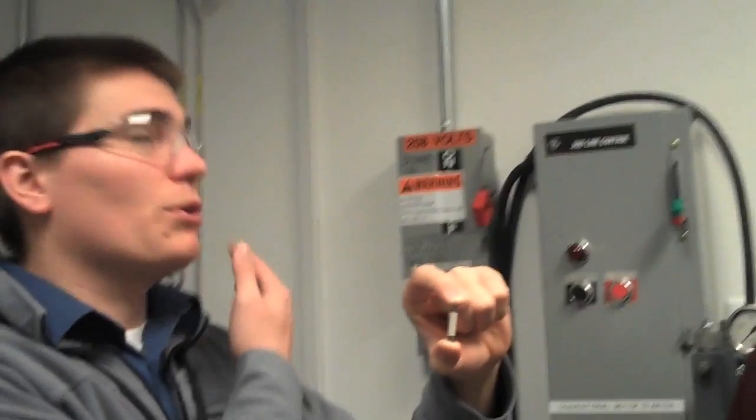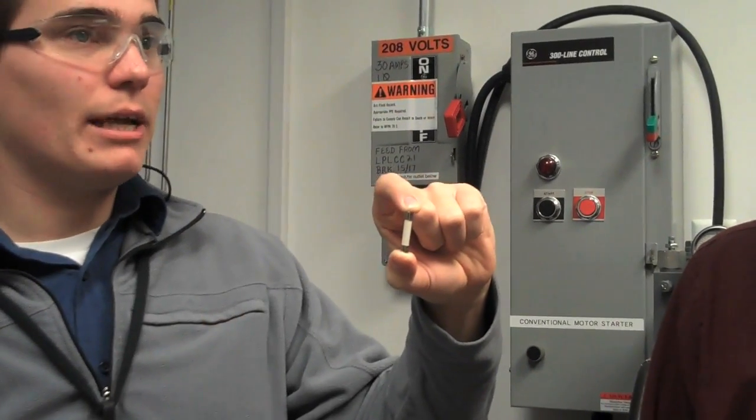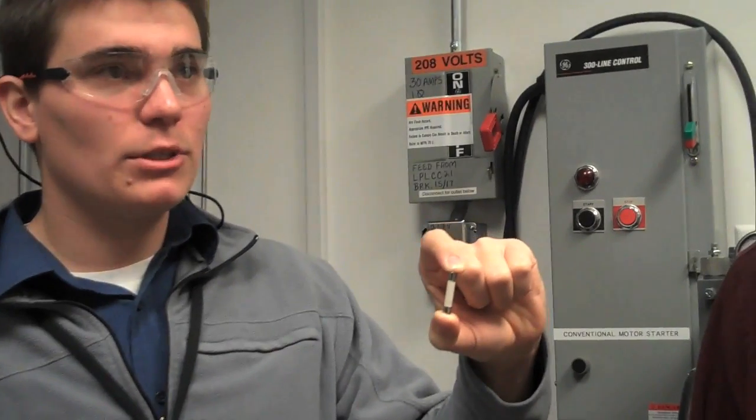Available fault current out of these walls is about 500 amps, 600 amps. In industrial systems, it's in the thousands of amps.